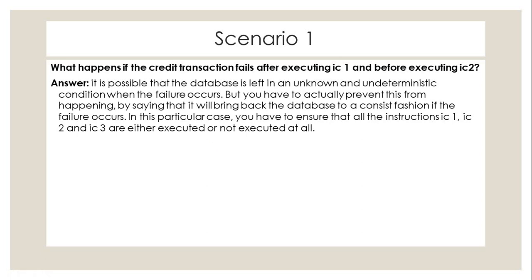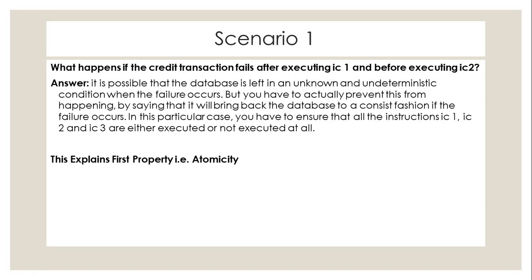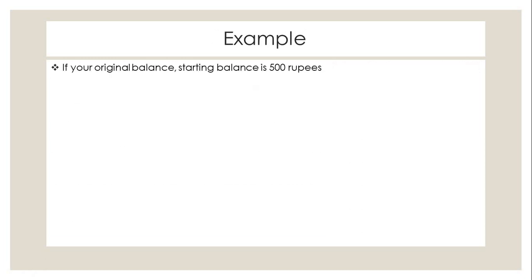To prevent this from happening, we must bring the database back to a consistent state if a failure occurs. So if we look at the three instructions IC1, IC2, IC3 — either all three instructions are executed, or none of them are executed at all. This is what we call atomicity.